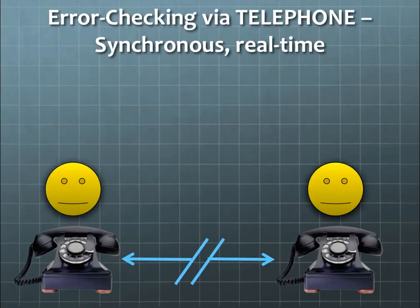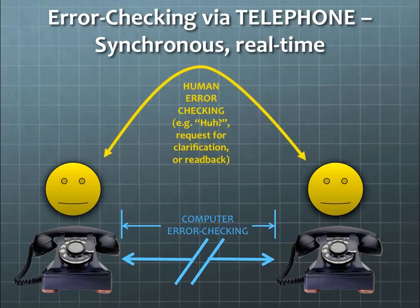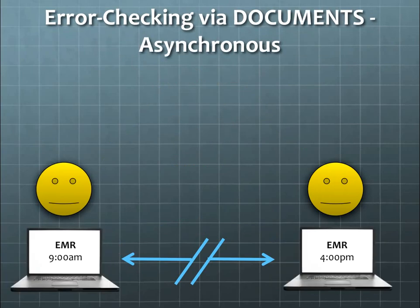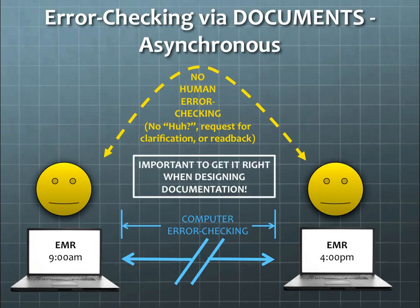An example of error checking via the telephone: in a synchronous, real-time conversation between two people, the telephones might have some form of electronic error checking to make sure what goes into the microphone on one side comes out of the speaker on the other. But the two human beings also help negotiate the transfer of information through human error checking such as the 'huh,' the request for clarification, or verbal readback. The challenge with electronic medical records is that they're documents — asynchronous communication. So even though the computers might have computer error checking to ensure that what goes into the EMR at 9 o'clock a.m. comes out of the EMR at 4 o'clock p.m., there's no human error checking — no 'huh,' no request for clarification, or readback. This is why it's so important to consider these factors when designing clinical EMR documentation.